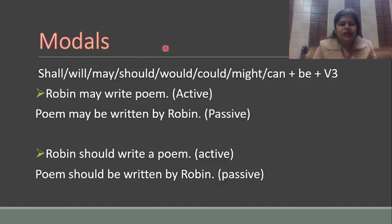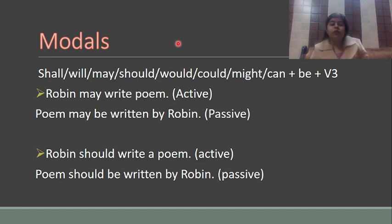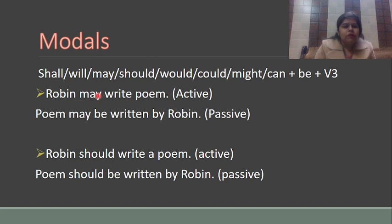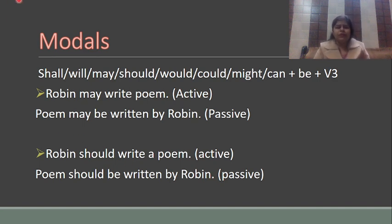Finally, modal sentences are very easy to convert to passive. When you see sentences like 'Robin may write a poem,' we copy the modal and add 'be': 'A poem may be written by Robin.' Similarly, 'should' becomes 'should be written by Robin.' Whatever modal is used, we add 'be' to it and use the third form of the verb. Structure: Object + modal + be + verb third form + by + subject.